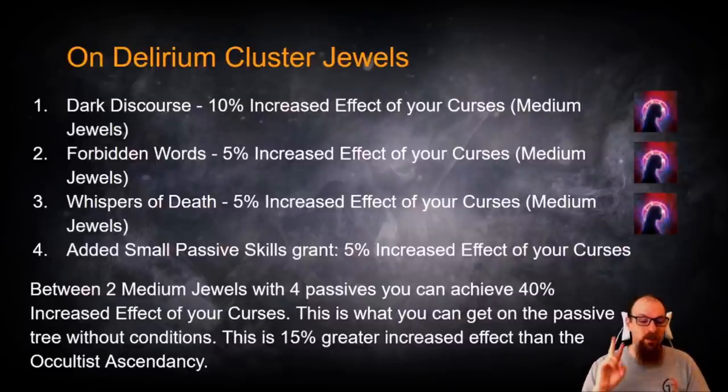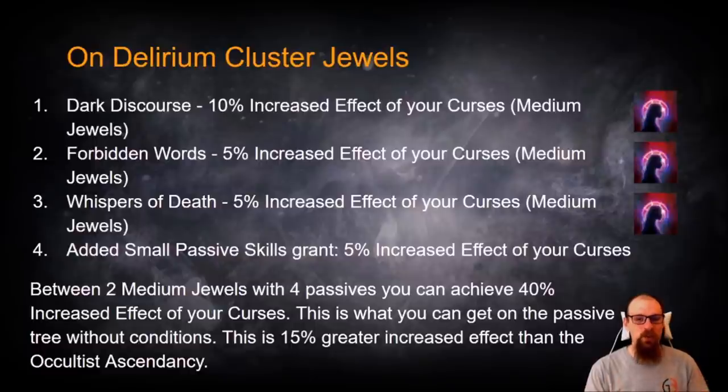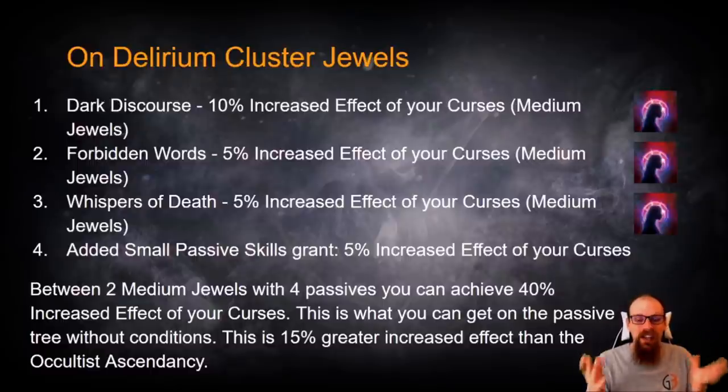So this means that between two Medium Cluster Jewels with four passives each, you can achieve 40% increased effect of your curses. Do you remember what we said earlier as we were looking at passive tree power? The total amount of passive tree power that was unconditional was 40% effect of your curses.